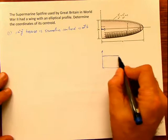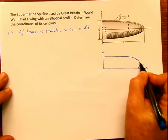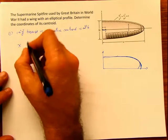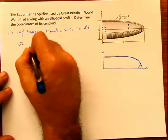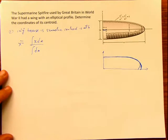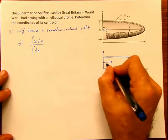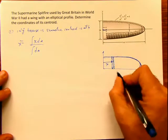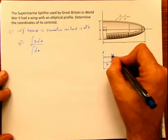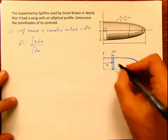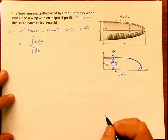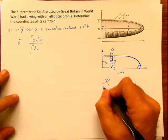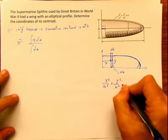So now in x, this is what we have. Remember, x-bar is the integral of x dA divided by the integral of dA. So I have to find my dA. If I measure x in this direction, my dA is going to be this distance y times dx. And that y is defined by the ellipse equation: x² divided by a² plus y² divided by b² equals 1.